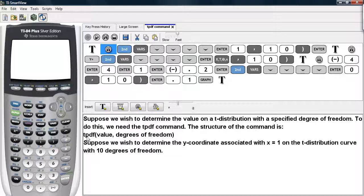You go ahead and find the tPDF command, then you type in the value, then a comma, and then the degrees of freedom.